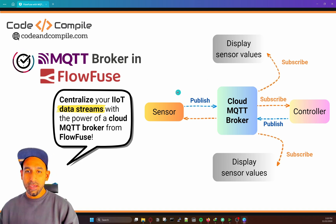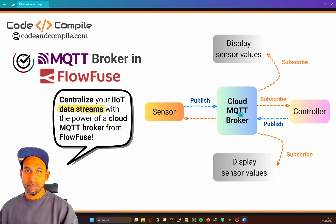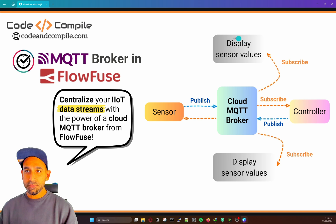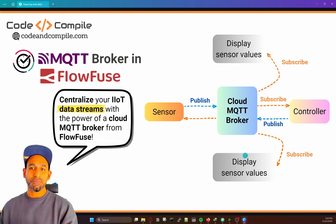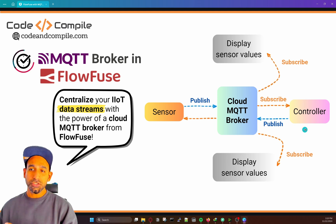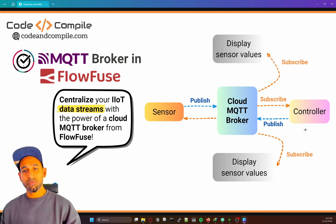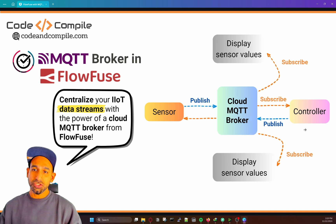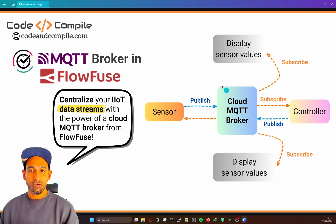Here you can see I have a sensor, and this is going to publish some data to the cloud — the MQTT broker from FlowFuse. We will have displays which are going to subscribe to these values to display on the screen. And then we have a controller; the function of the controller is to subscribe to the data, work on it, and then publish back to the broker, which other devices can subscribe to as well.